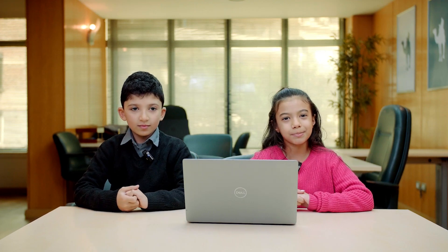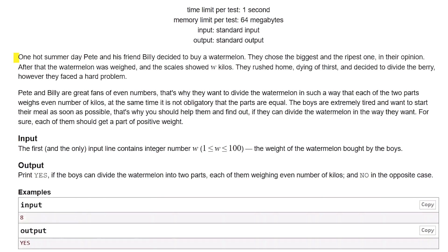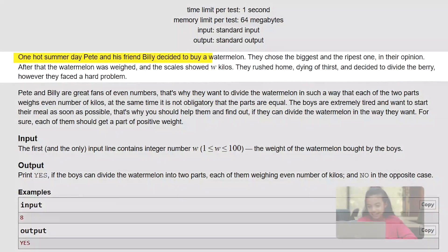Welcome to another video. Today we're going to start a problem on CodeForces with C++. One hot summer day, Pete and his friend Billy decided to buy a watermelon. They chose the biggest and the ripest one in their opinion.